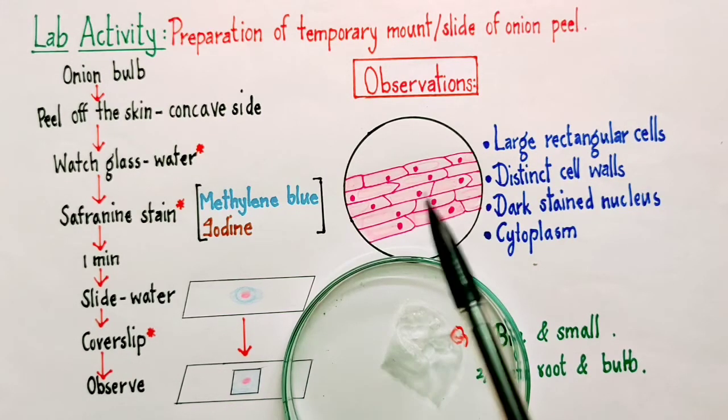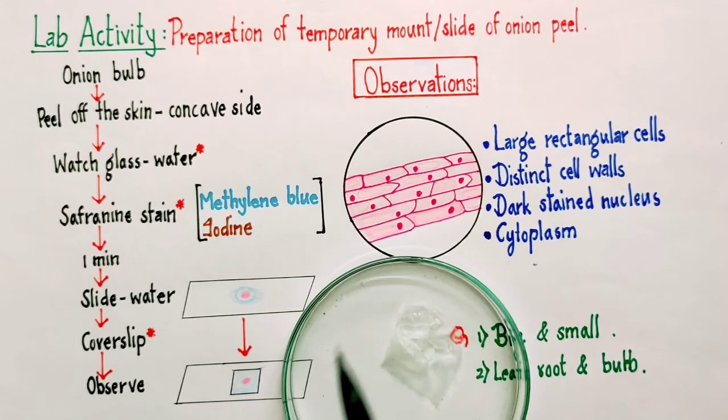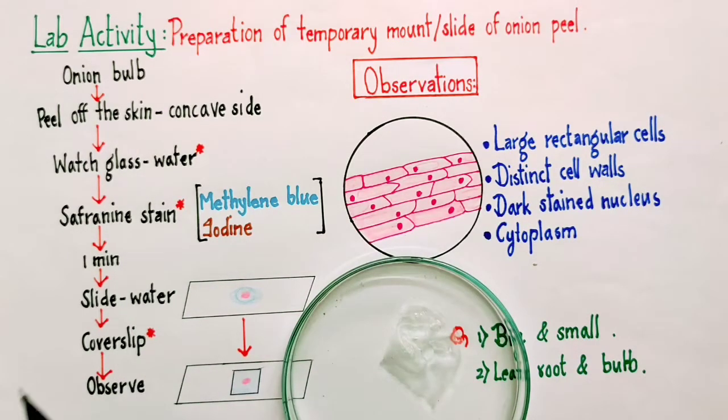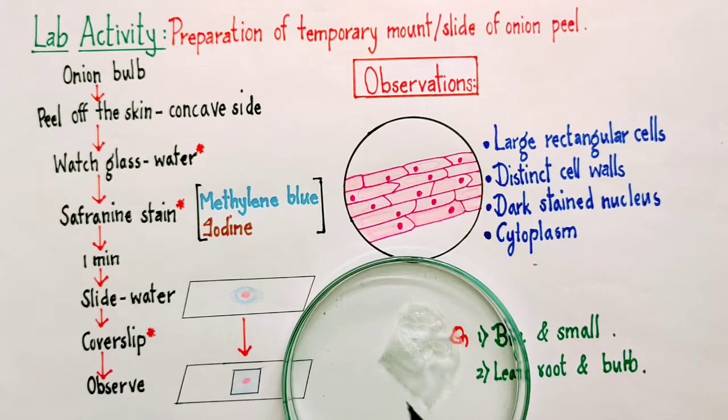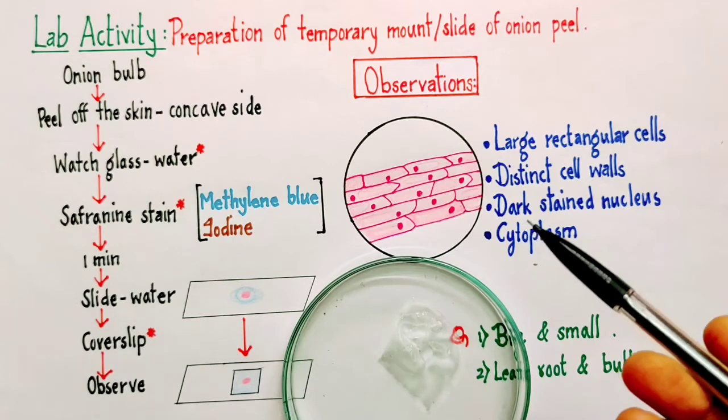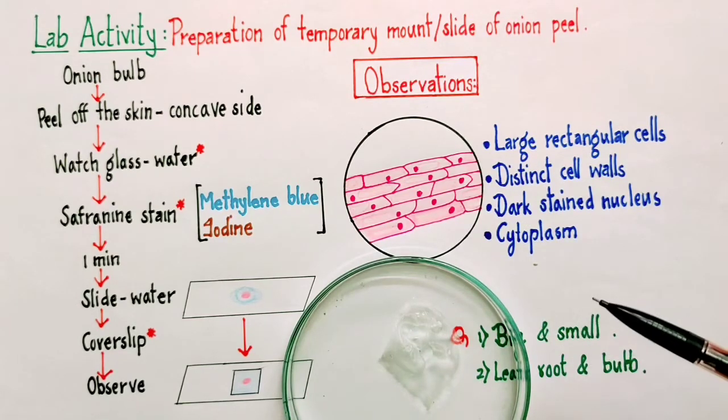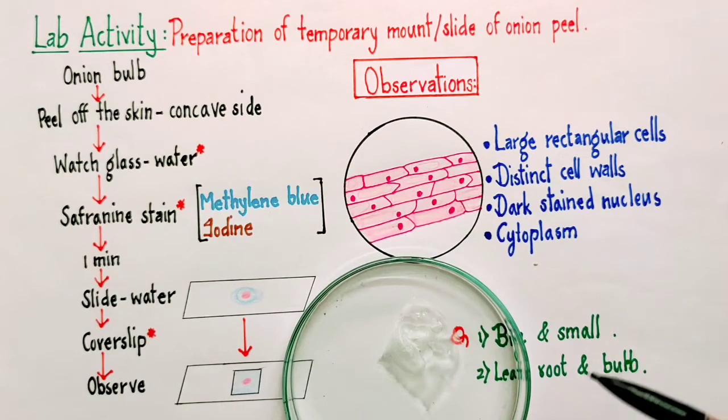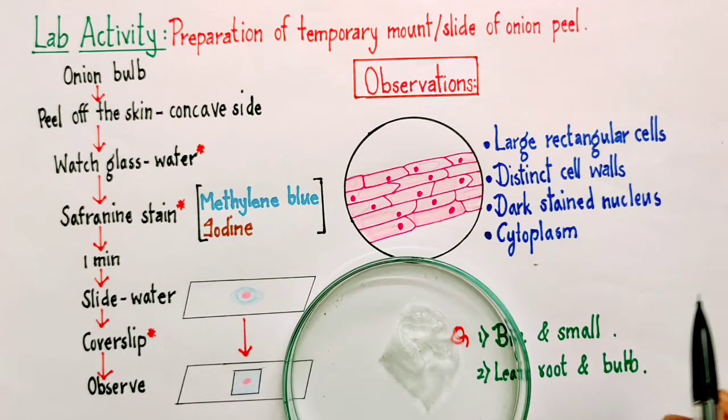We want to see the cells very clearly. We want to distinguish one part of the cell from another part. For that we need to add the stain. When we add the stain, the different parts of the cell absorb the stain by different extent depending upon their chemical composition.